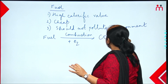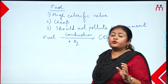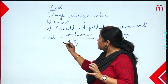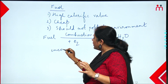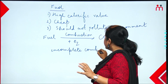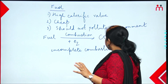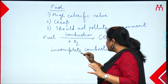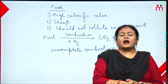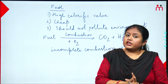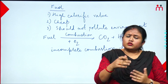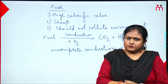...produces carbon dioxide and water in complete combustion. But in incomplete combustion, a highly poisonous gas is produced — which is carbon monoxide. So complete combustion gives carbon dioxide and water vapor, while incomplete combustion gives carbon monoxide along with some carbon and carbon dioxide.